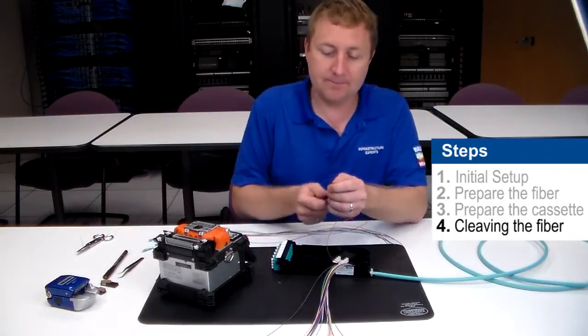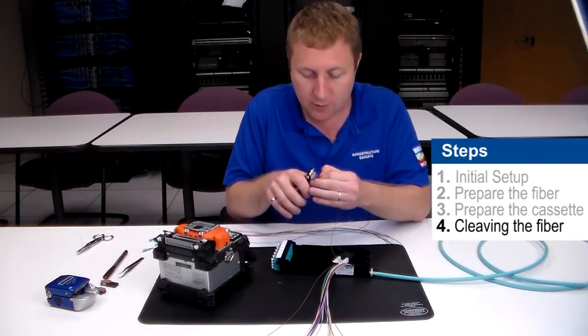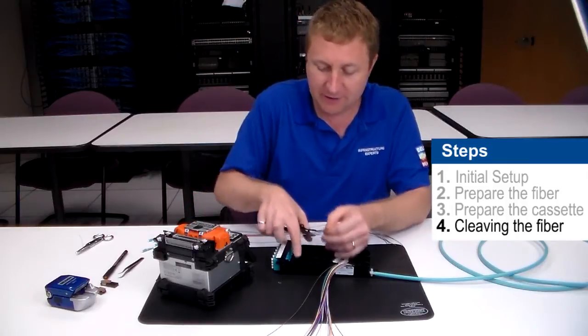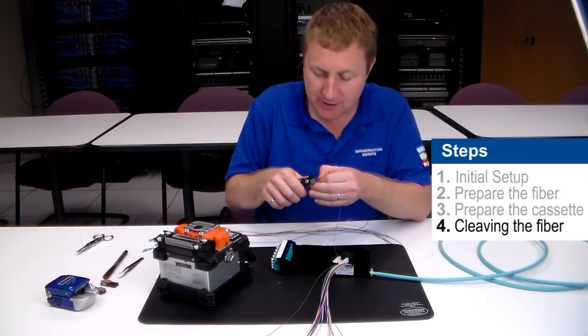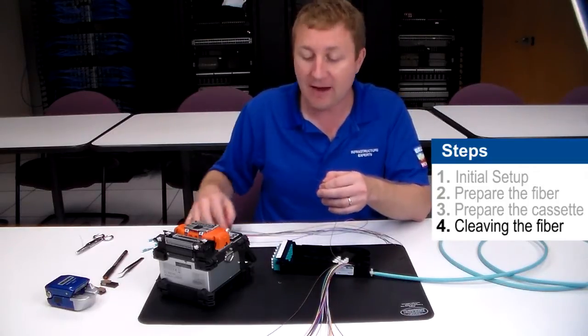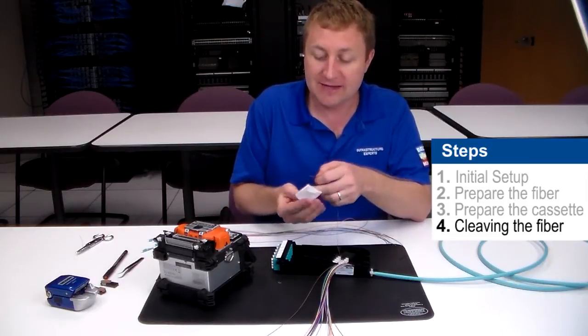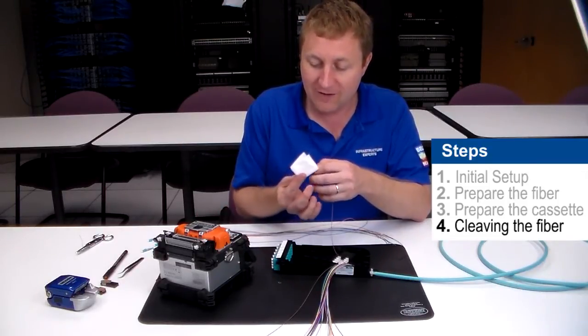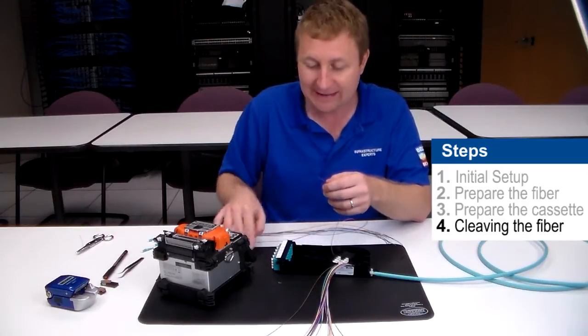My first step, we're going to strip. I'm going to remove about three quarters of an inch of buffer in small steps. Then using the small notch I'm going to remove the primary coating. I want to make sure that I keep my stripper perpendicular to my fiber. I don't want to go on an angle where I may damage the glass. Then I'm going to use an alcohol wipe to remove any residue that may be on the fiber. It should be squeaky clean.